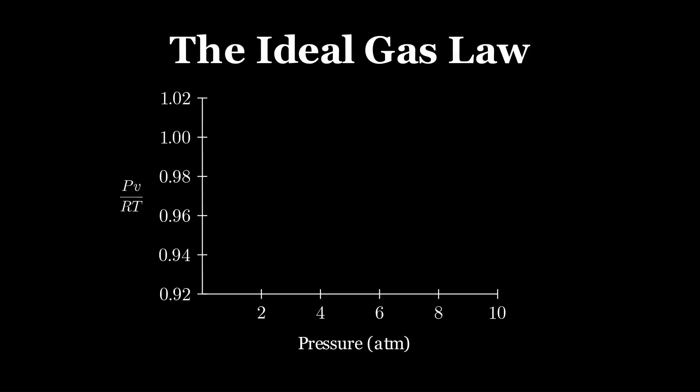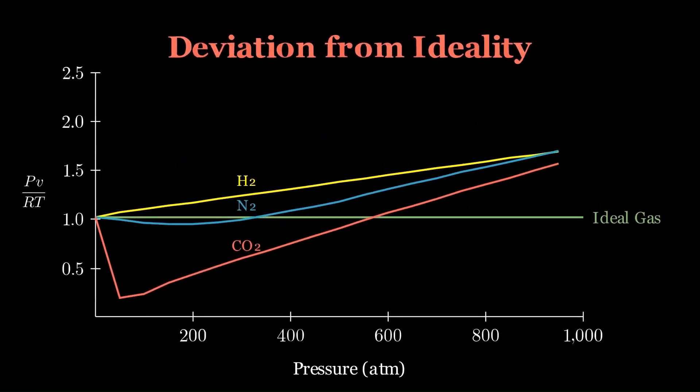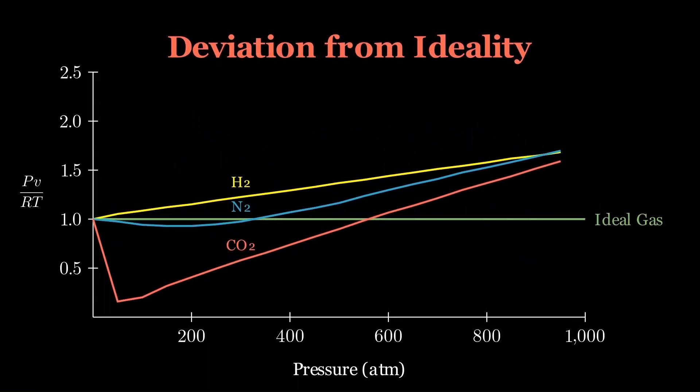If we plot PV/RT against pressure, an ideal gas would trace a perfectly flat line at 1. But real gases behave differently. Hydrogen shows values slightly above 1, nitrogen dips just below, and carbon dioxide deviates the most. As we increase the pressure, these deviations grow significantly, highlighting how real gases depart from ideal behavior, especially under compression.